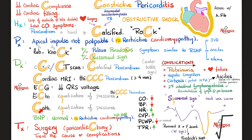Atrial natriuretic peptide and brain natriuretic peptide are usually normal in constrictive pericarditis — this differentiates it from restrictive cardiomyopathy, which usually has high BNP. Additionally, restrictive cardiomyopathy usually has a palpable apical pulse, whereas in constrictive pericarditis the apical impulse is not palpable.